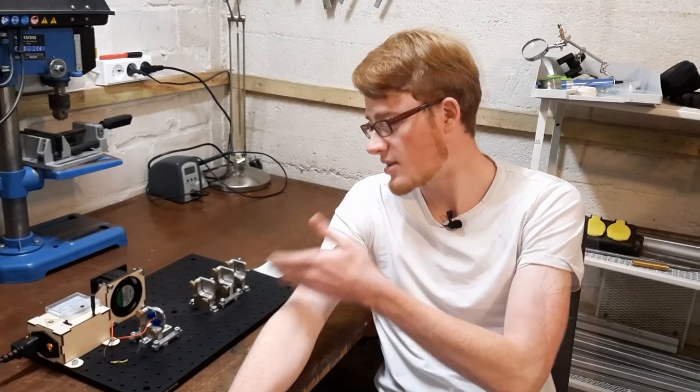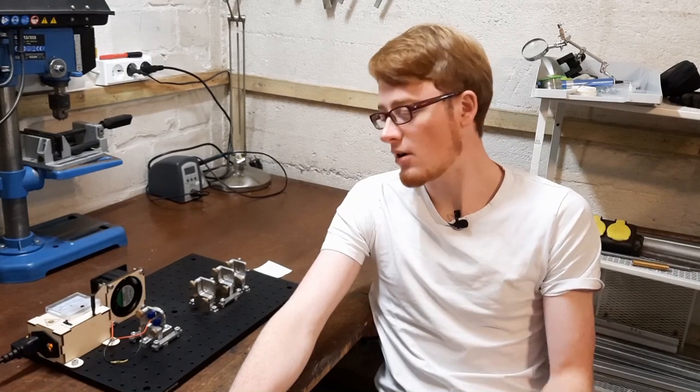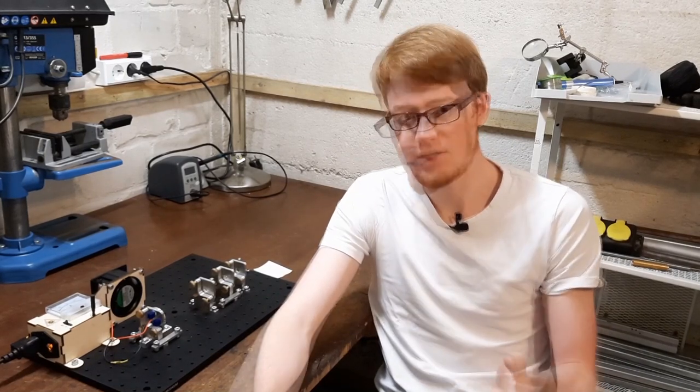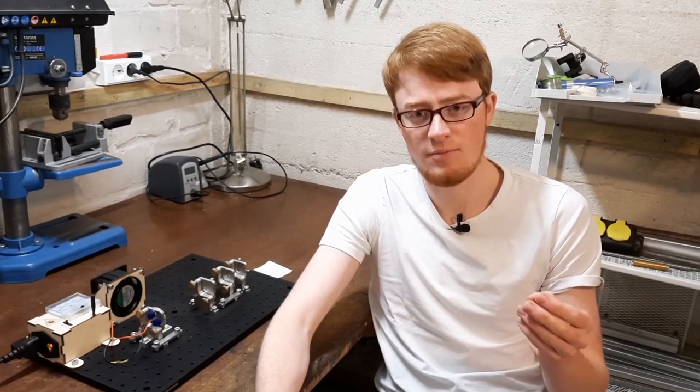Before I show you how this setup actually works, I want to briefly describe why this setup is special. The ruby itself actually mostly consists of aluminum oxide and only has a few tenths of a percent, maybe half a percent, of chromium dopant. The chromium ions are actually the laser active ions which create the laser light.